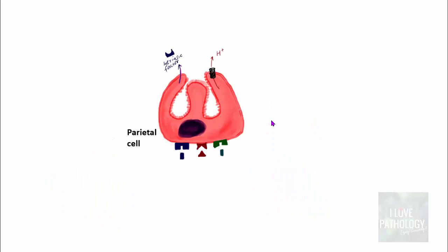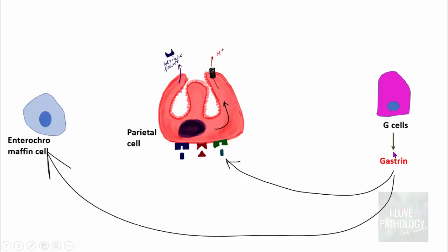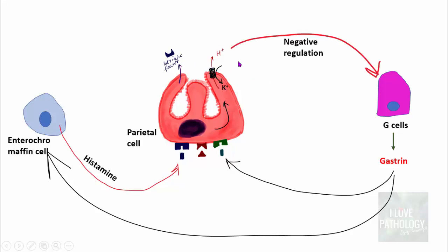Let's revisit the normal understanding of acid secretion. G cells in the antrum secrete gastrin, which stimulates parietal cells to produce acid. Gastrin also stimulates enterochromaffin cells, which secrete histamine. Histamine and gastrin, along with acetylcholine, regulate the parietal cell's function to secrete acid via the hydrogen-potassium pump. Once there is enough acid secretion, somatostatin released by D cells acts as a negative regulator, reducing gastrin synthesis by G cells — that is the normal regulatory mechanism.